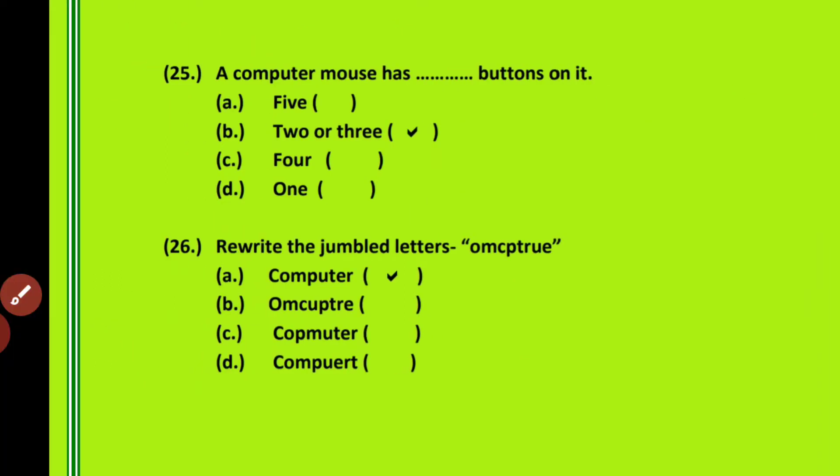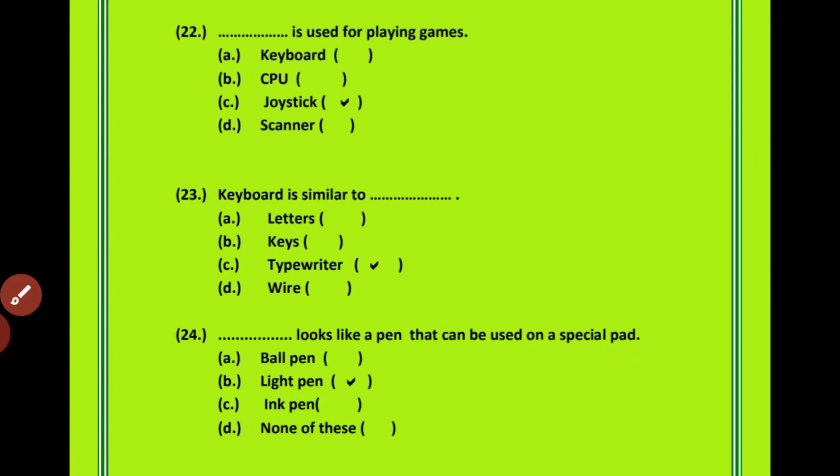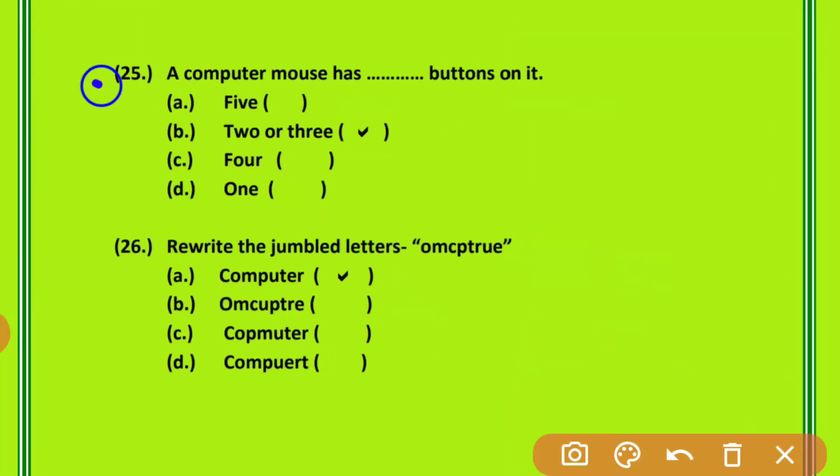Question 25: A computer mouse has dash buttons on it. Computer mouse में कितने buttons होते हैं? Your options are 5, 2 or 3, 4 or 1. A computer mouse has 2 or 3 buttons on it — option B is correct.